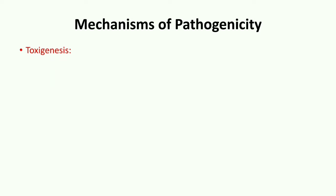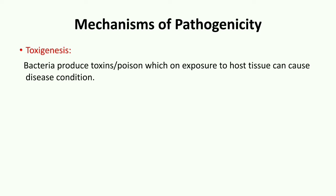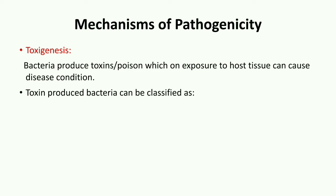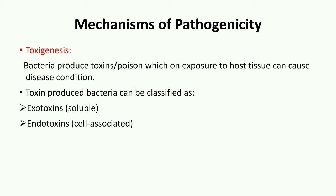The next property is toxigenesis. Toxigenesis is the ability of a bacteria to produce poisonous substances known as toxins which, on exposure to host tissue, can lead to a diseased condition. The toxins produced by bacteria can be classified as exotoxins or soluble toxins, which are released from the bacterial cell into the host tissue. The second type of toxin is endotoxin. They are cell-associated substances, mainly referring to the lipopolysaccharide component present in the outer membrane of gram-negative bacteria.